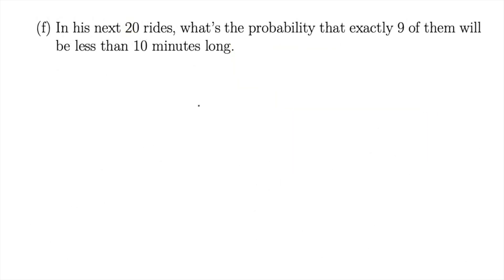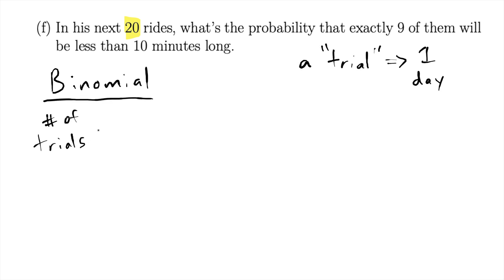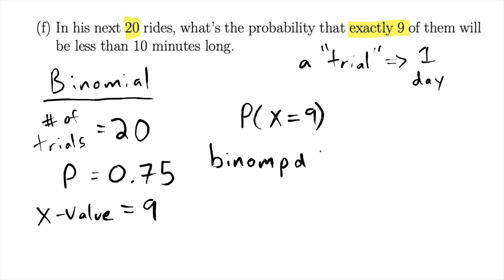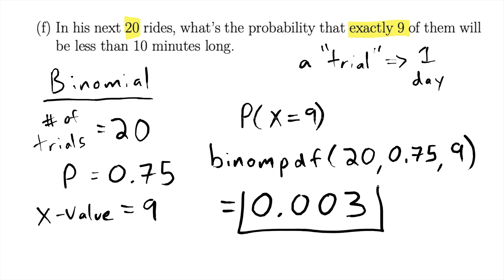In this problem we're still working with the same setup, but instead of a week, now we're talking about out of 20 rides. We still have a binomial situation, but the number of trials has changed to 20. The probability of success remains 75%. We're looking for the probability that x equals exactly 9. Using the binomial pdf function, that probability is approximately 0.003. It's low because the further away you get from the expected value, the smaller the probability is.